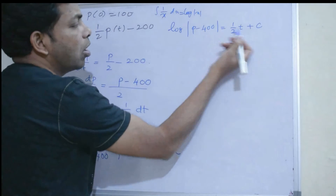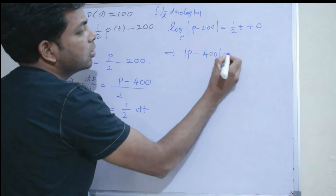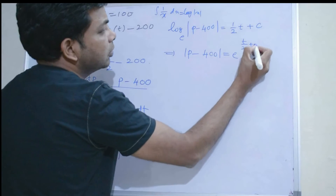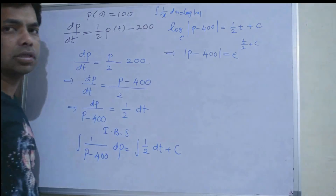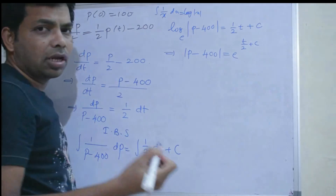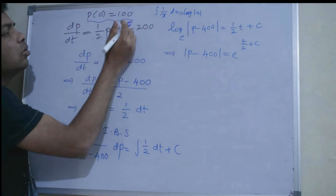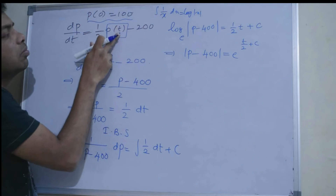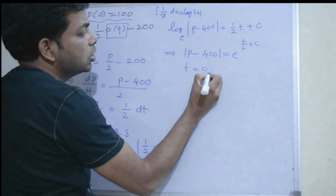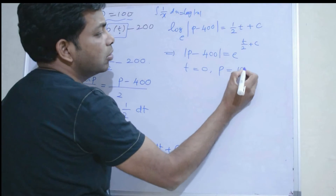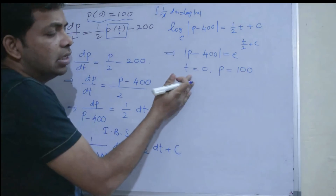There is a conversion from log to e. We can write |p - 400| = e^(t/2 + c). This is |p - 400| = e^(t/2) · e^c. Now applying the initial condition p(0) = 100 — at t = 0, p = 100, meaning initially there are 100 rabbits. Substituting: |100 - 400| = e^0 · e^c, so 300 = e^c.